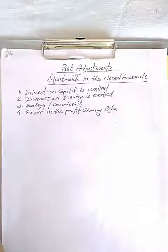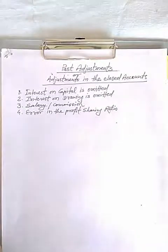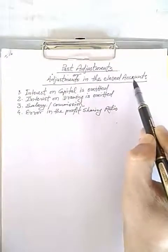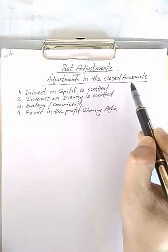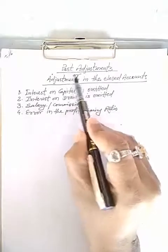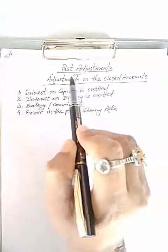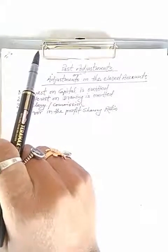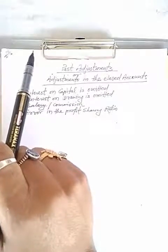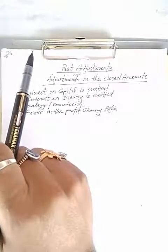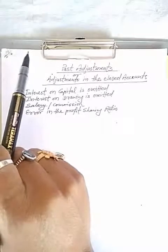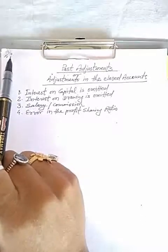Good morning students. Today I am going to discuss about past adjustment, also known as adjustment in the closed accounts. First we will understand what is past adjustment or adjustment in the closed account. Sometimes after the accounts of the partnership firm have been closed after the financial year, it is discovered that there have been some error or omission in the accounts.